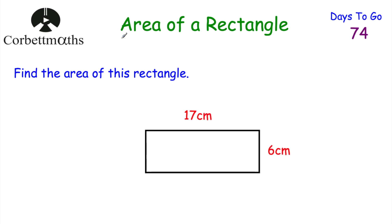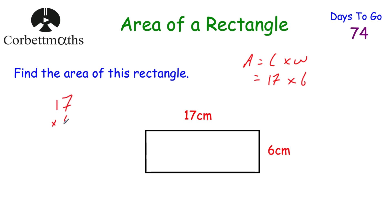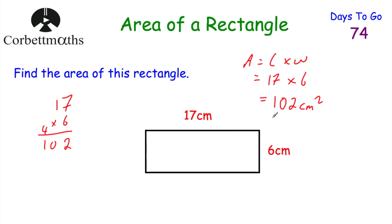This time we've been asked to find the area of this rectangle — and this is a non-calculator question. To find the area, we do the length multiplied by the width: 17 multiplied by 6. 6 times 7 is 42, put the 2 down, carry the 4. 6 times 1 is 6, plus 4 is 10. So the area of this rectangle is 102 centimetres squared.